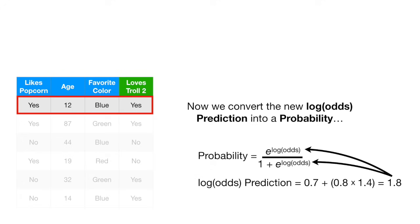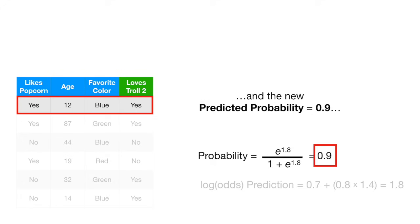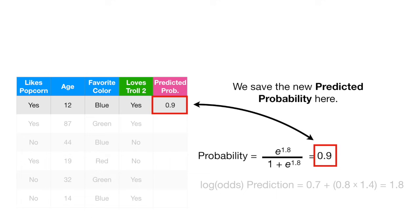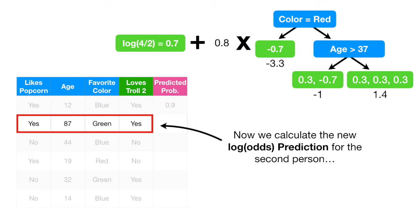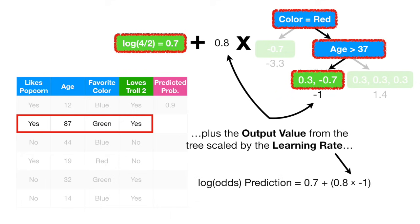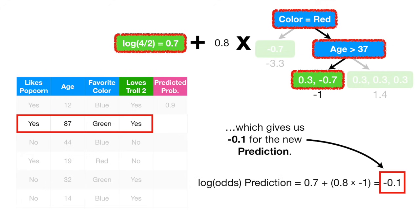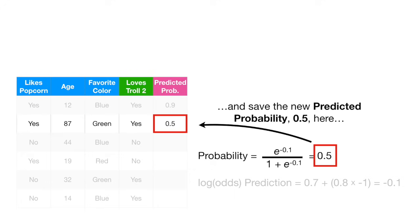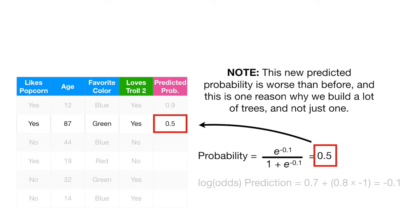Now we can convert the new log of the odds prediction into a probability, and the new predicted probability equals 0.9. So we are taking a small step in the right direction since this person loves Troll 2. Now we calculate the new log of the odds prediction for the second person: 0.7 plus 0.8 times negative 1, which gives us negative 0.1. Converting to probability gives us 0.5. Note: this new predicted probability is worse than before, and this is one reason why we build a lot of trees and not just one.